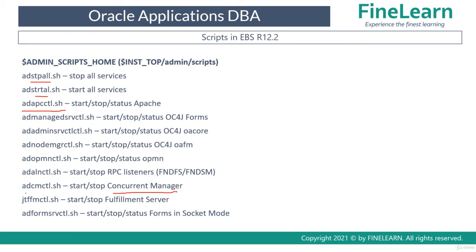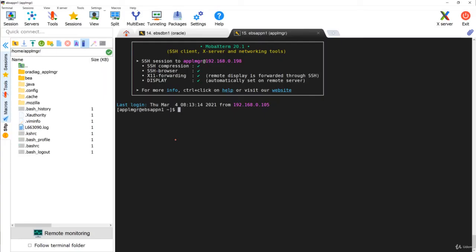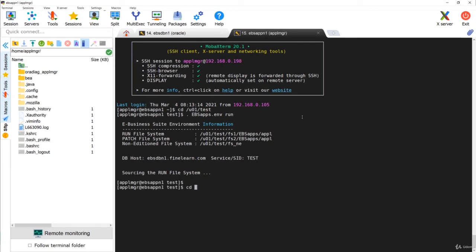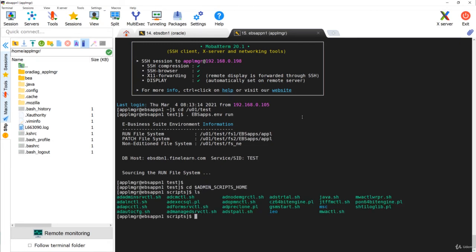I have to only use the individual scripts so that I can stop and start only a specific component. For example, to stop and start only concurrent processing for reporting, I simply run the script adcmctl.sh with stop and then start. Bouncing any individual component can be achieved using these individual scripts. The syntax can also be checked by opening the scripts in the admin scripts home.